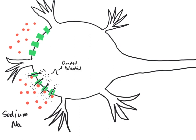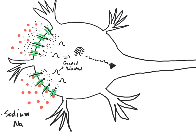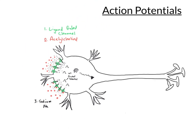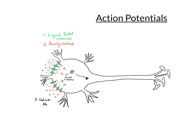Now we're going to allow this to happen all over the soma of the neuron, which will provide enough graded potentials that they can summate to reach threshold and fire at our axon hillock, starting the process of action potential propagation.